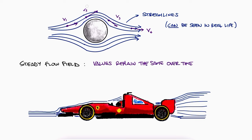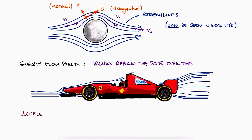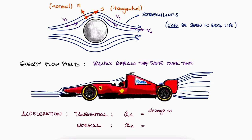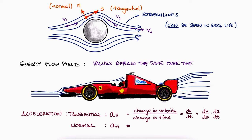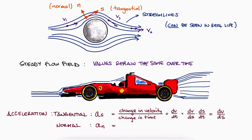We will define the unit vectors as s for the direction tangential to the streamline at any point, and n for the direction normal to the streamline at any point. The acceleration in the tangential direction would therefore be a_s, which is the change in velocity over time — dv/dt. With the chain rule, we can also write this as dv/ds times ds/dt, which is dv/ds times the velocity v, since v is defined as ds/dt.